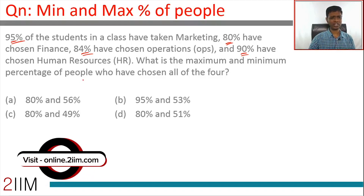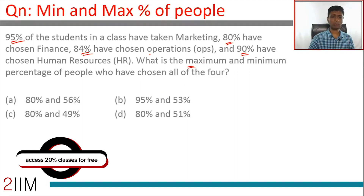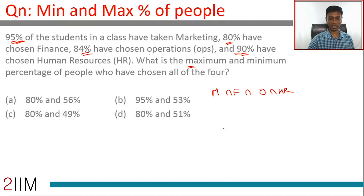Finding the maximum is straightforward. We need the maximum percentage that have chosen all four. Imagine if everyone who has chosen finance has also chosen ops, everyone who has chosen ops has chosen HR, and everyone who has chosen HR has chosen marketing — then we have the maximum possible value for M ∩ F ∩ OPS ∩ HR.